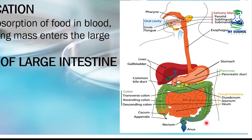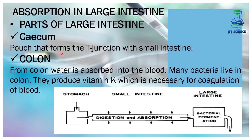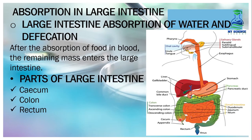The colon is further divided into three sections: the transverse colon, the ascending colon, and the descending colon. The T-shaped swollen portion is called the cecum — the pouch that forms the T-junction with the small intestine. The cecum is the portion where the small intestine and large intestine meet at a T-junction.